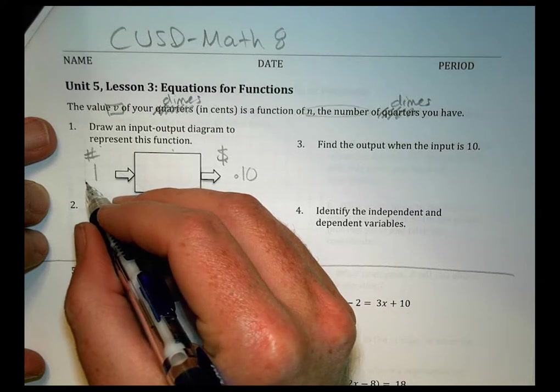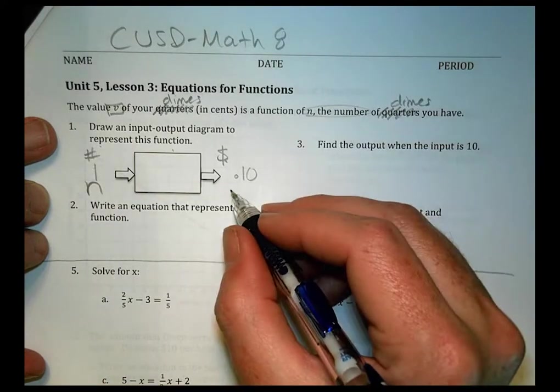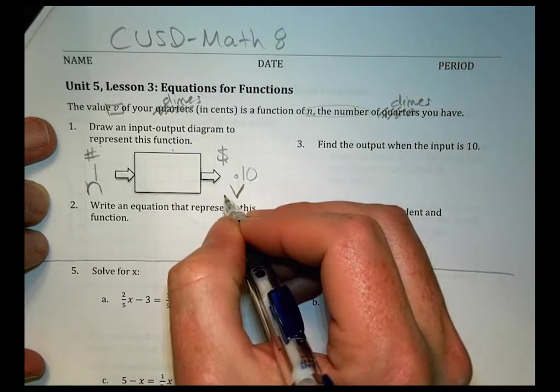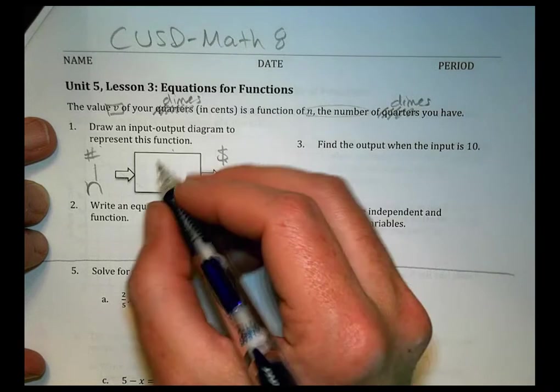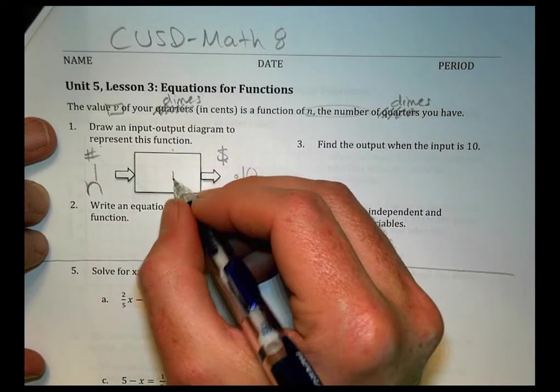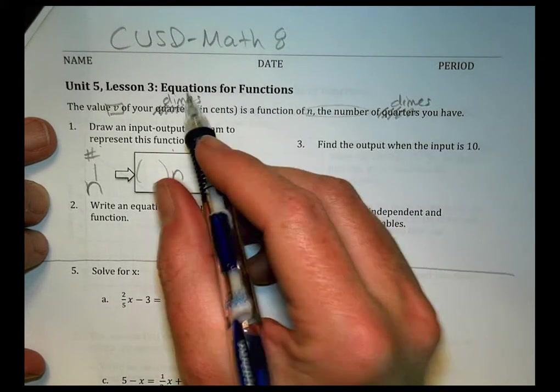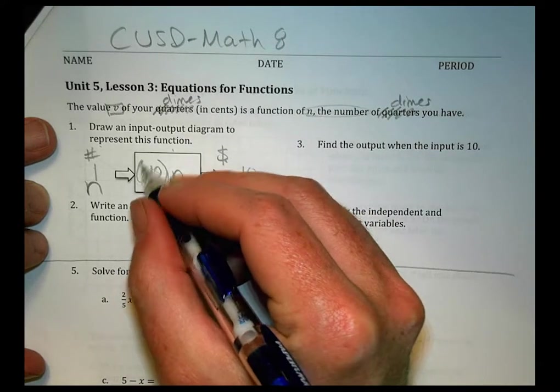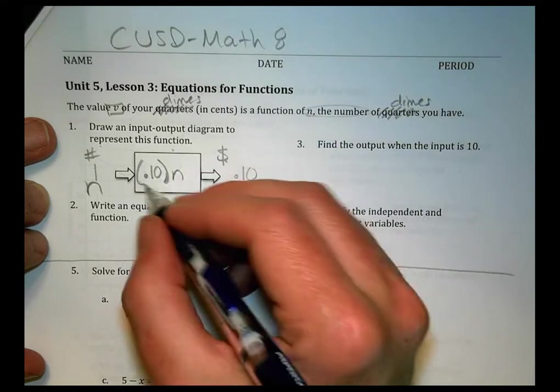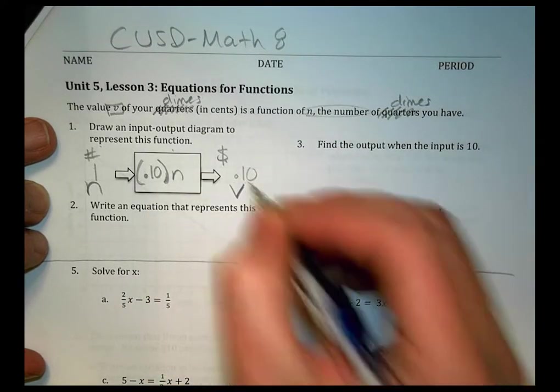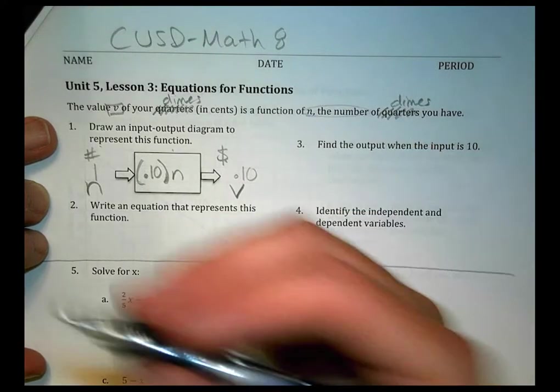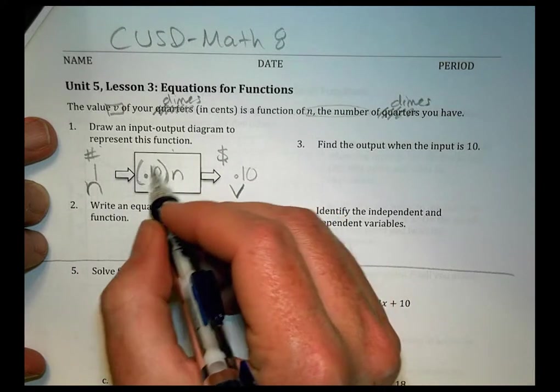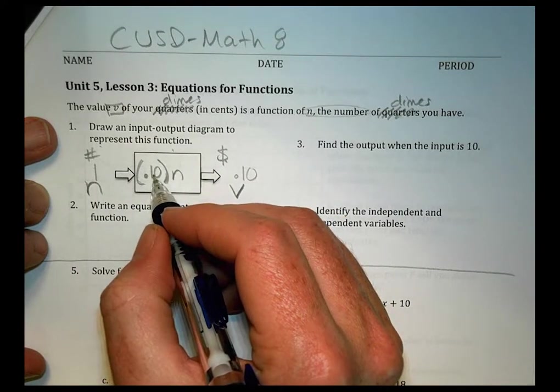We're going to call this over here our number, we'll call that N, and we'll call this variable over here our value. To get from our number to our value, I have to do something to the number to find the value. So whatever the number is going to be, we're going to multiply that by the value of one dime. And one dime has a value of 10 cents. So we could say 10 cents times the number of dimes will tell me the value of my dimes. If I had 2, we'd do 2 times 0.10, ending up with 20 cents.